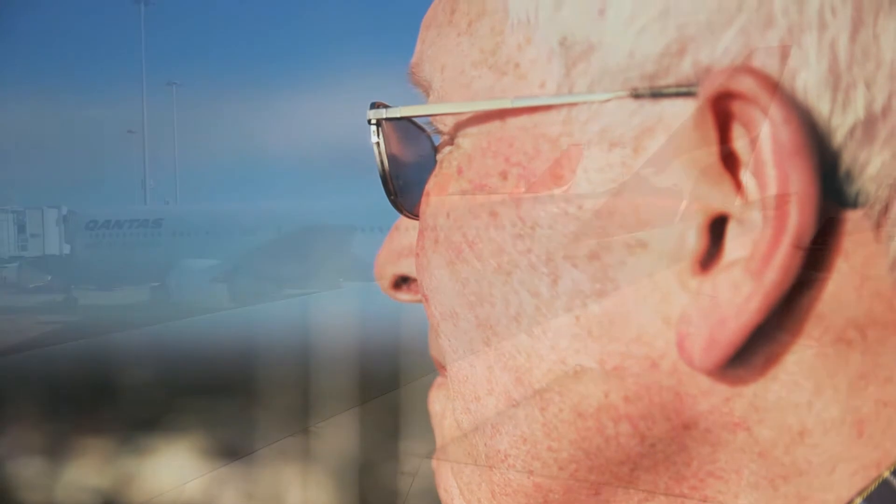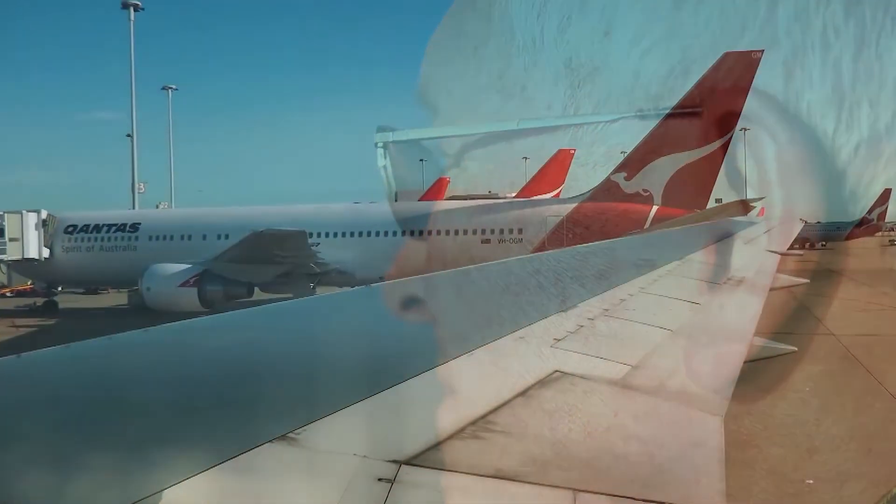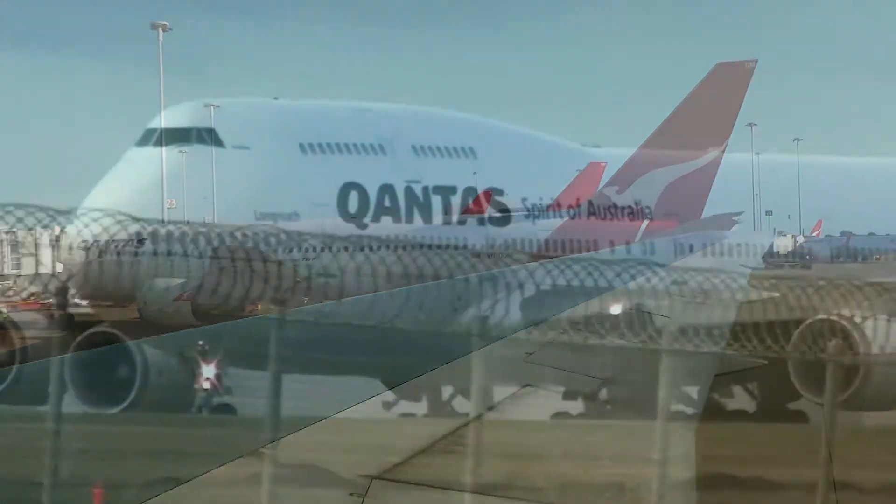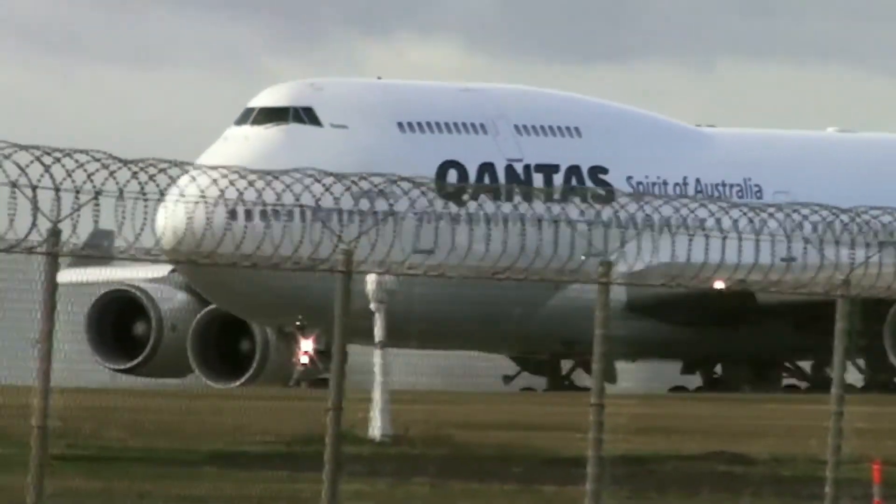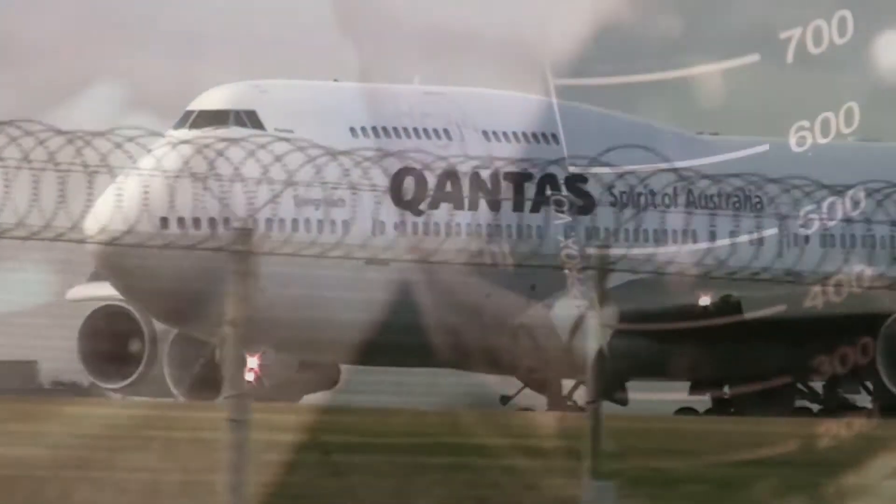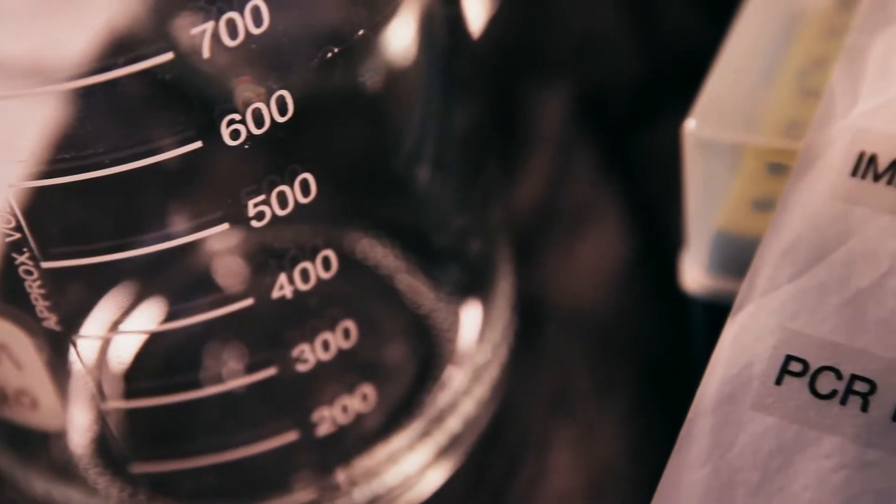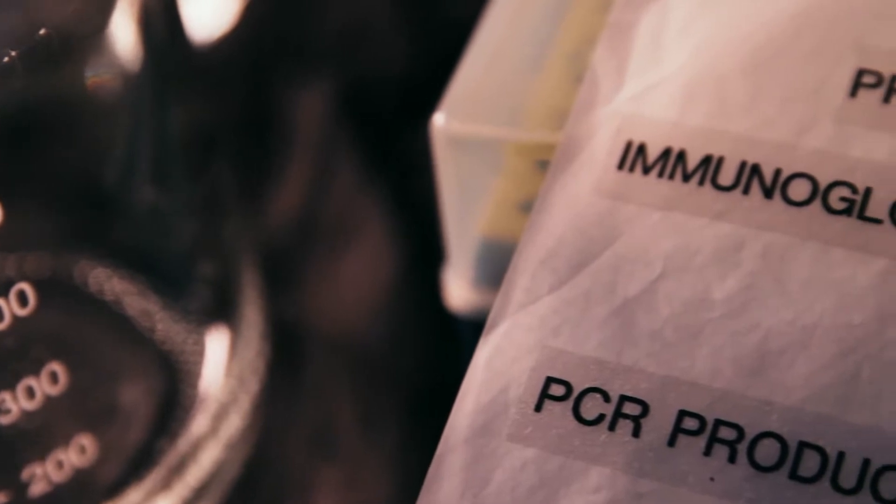I can still remember the eureka moment sitting in a plane as it was taxiing out of Sydney Airport. This was about 1987 and the question came to my mind, what are the specific mutations that could be detectable by PCR?